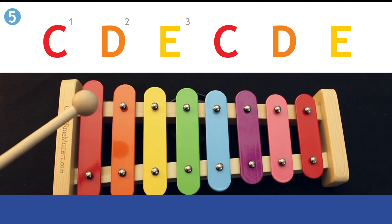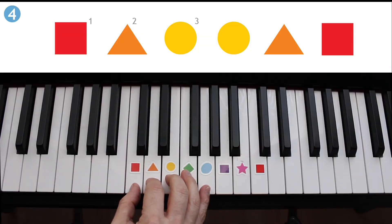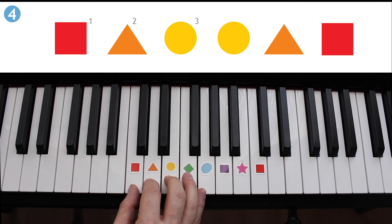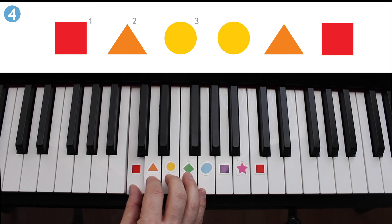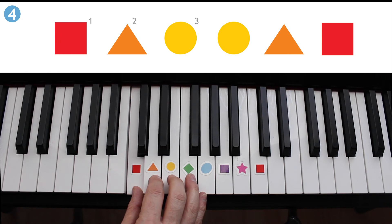Excellent work. Now we'll start with exercise four on the keyboard. Remember the finger numbers: your thumb is one, your index is two, middle is three. Here we go, one, two, ready, go: C, D, E, E, D, C. One more time, and I'll point out the finger numbers.